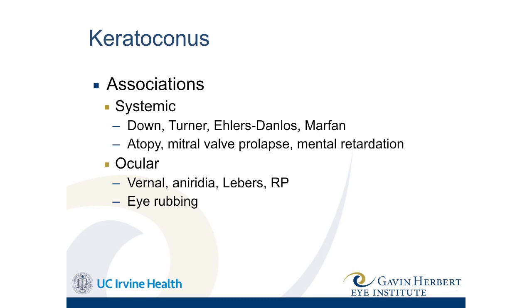There are systemic associations: Down syndrome, Turner syndrome, Ehlers-Danlos, and Marfan syndrome. The latter conditions involve weak, stretchy collagen, so a higher risk of keratoconus makes sense. With atopy or allergy, if someone is constantly rubbing their eyes, that can wear down the strength of the cornea — though typically you need some underlying risk factor, not just eye rubbing alone. Ocular conditions like vernal disease, which causes a lot of itching and rubbing, are also associated, as is laber's and general hamerosis.